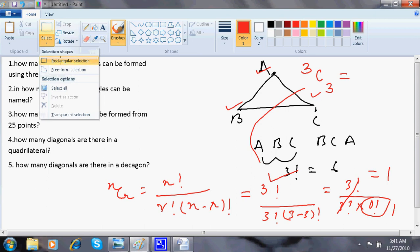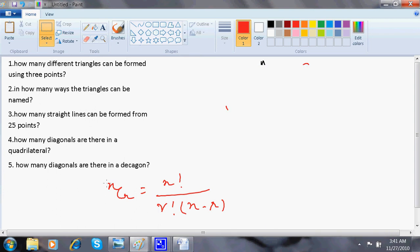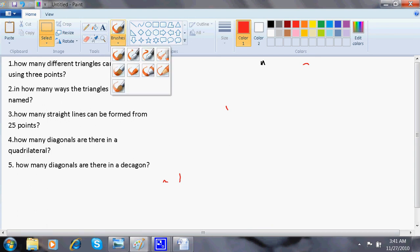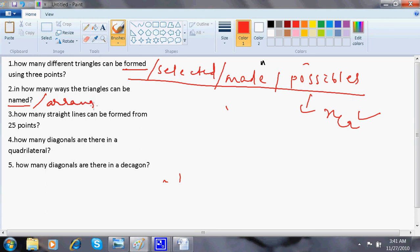When students ask me where to use combination and where to use permutation, it's a quite genuine question, but the answer is not so clear. Let me try to make it a bit clear. Look at this: formed, selected, made, possible - these are the synonyms, these are the codes that use combination. Can be named, arranged - use permutations. Done.